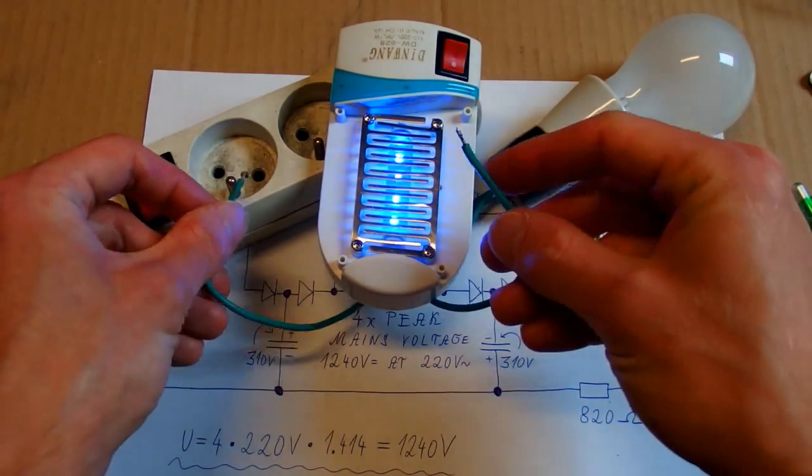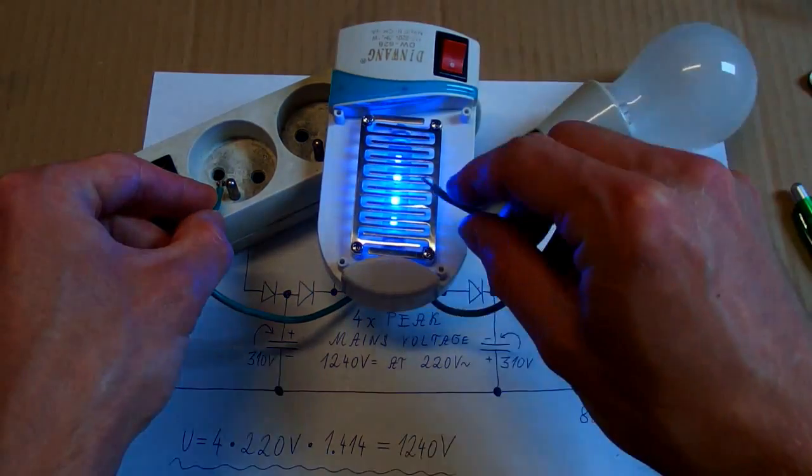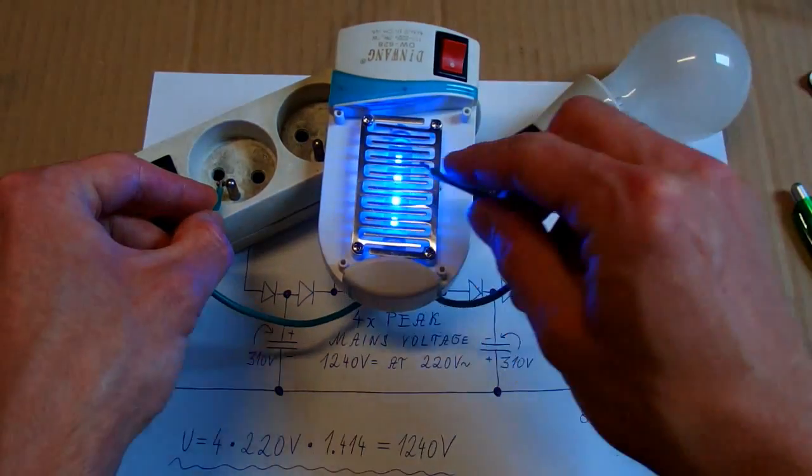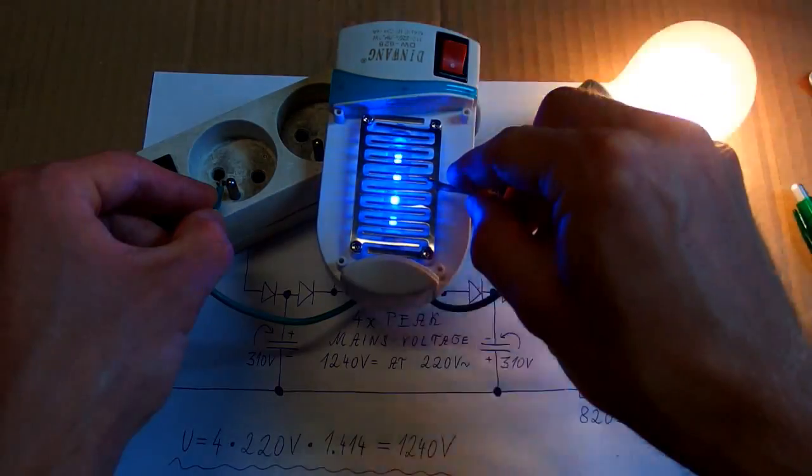Let's check it using a light bulb. When I touch just one side of the grid, it lights up half brightness. And when I touch both, it lights up full brightness.